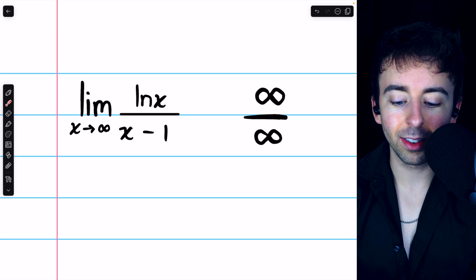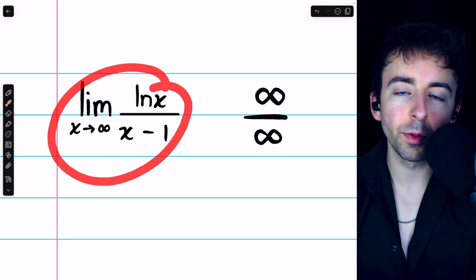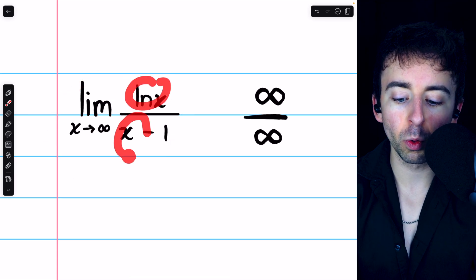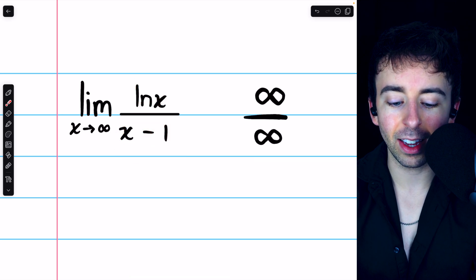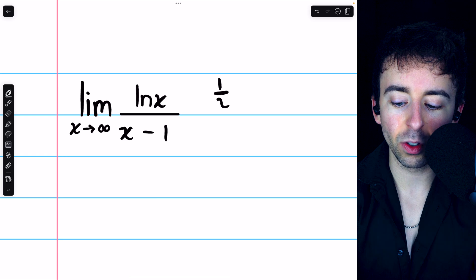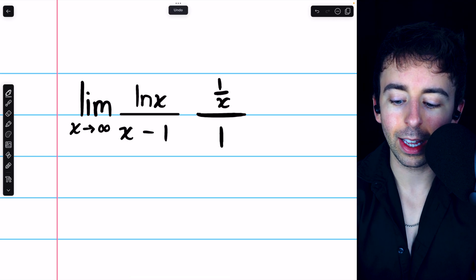L'Hopital's rule tells us that the limit of this quotient of functions is equal to the limit of the quotient of their derivatives, provided that limit exists. The derivative of ln x is 1 over x, and the derivative of x minus 1 is 1.